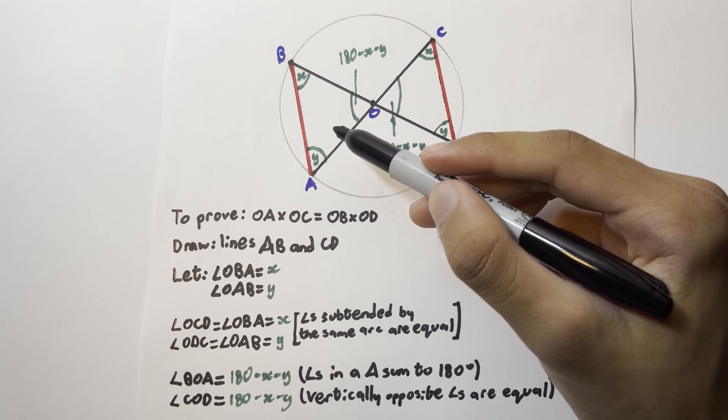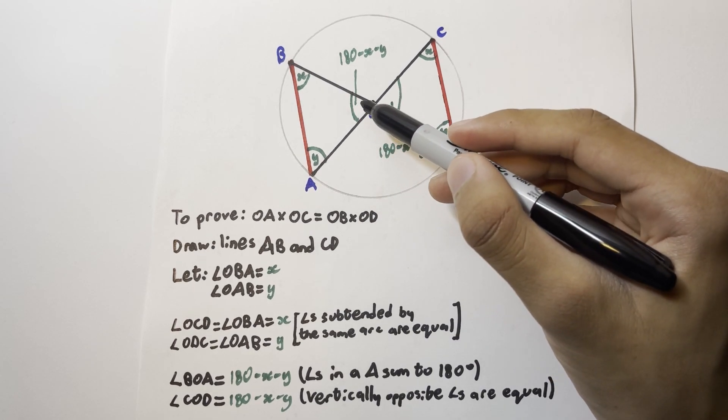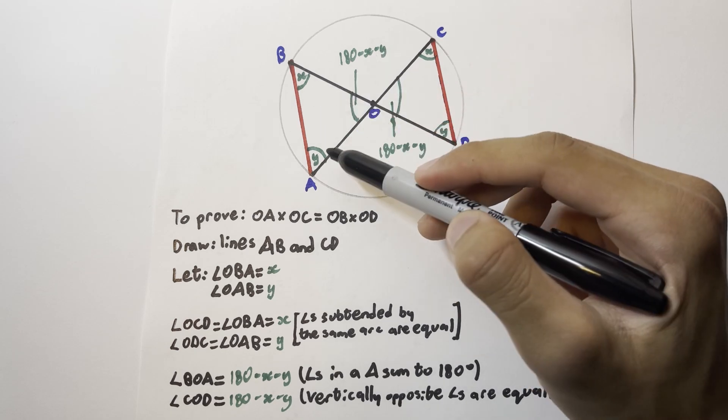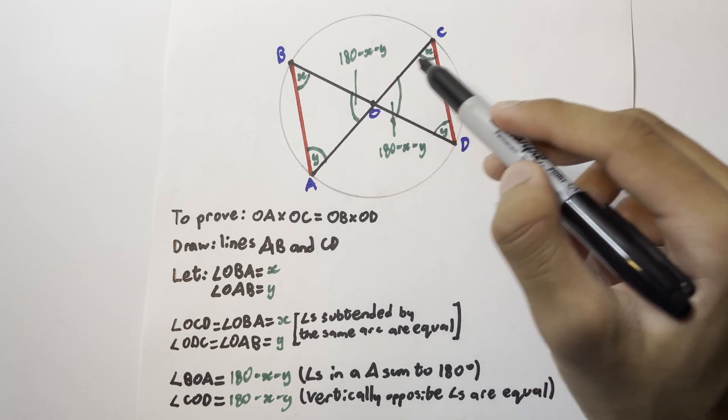Because the angles in the triangle sum to 180 degrees, we can work out that angle BOA is equal to 180 minus x minus y, because we've got an x there and a y there.